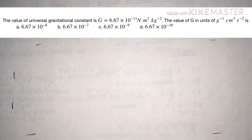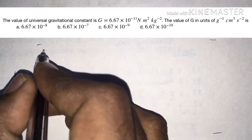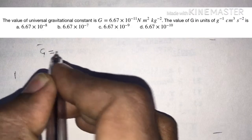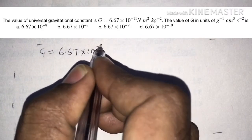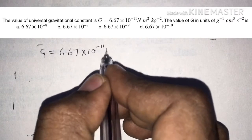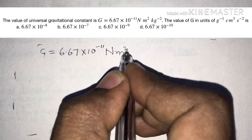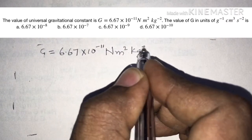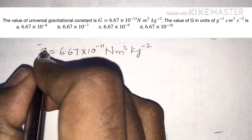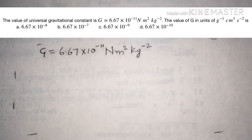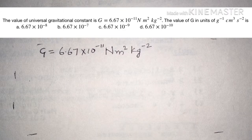The given value is G equals 6.67 into 10 power minus 11 newton meter square per kilogram square. The question asks us to convert this unit from newton meter square per kilogram square into units of per gram, centimeter cube per second square.